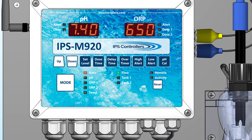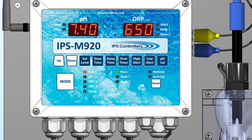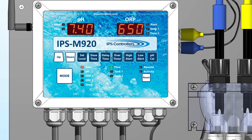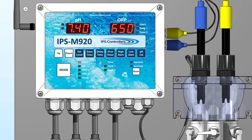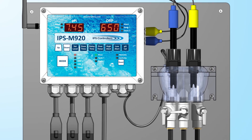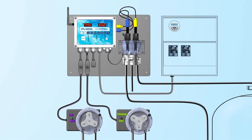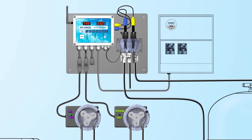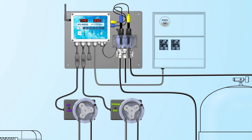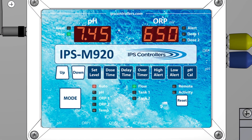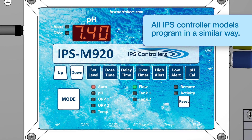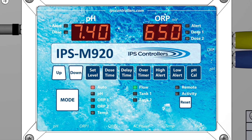The IPS controllers compare the readings received from the pH and the ORP sensors to the set levels programmed for pH, ORP1, and ORP2. If the readings are too high or too low, the controller will automatically turn on the chemical feed devices for the length of time that has been programmed for the dose time. The other settings are used to fine-tune the delivery of chemicals. The controller will also prevent chemical overdosing and underdosing.